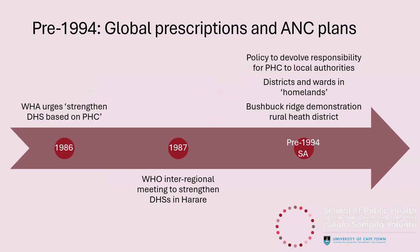Globally, the idea of a DHS was already well on the agenda by the mid-1980s. The 1986 World Health Assembly urged member countries to strengthen district health systems based on primary health care, and there was an inter-regional meeting in Harare in 1987 reaffirming this. In South Africa, by 1991, there was already a National Health Service delivery plan that decentralized primary health care to local authorities, but it wasn't achieved in practice. Some argued existing health wards in the homelands would lay groundwork for a DHS, but their politically motivated boundaries undermined well-functioning district health systems.